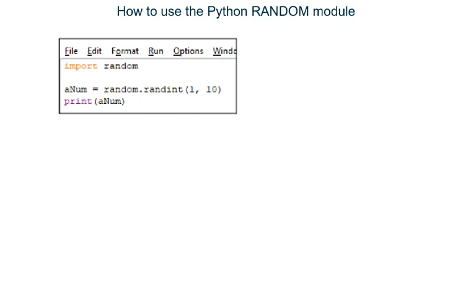Although that doesn't sound very useful, we actually do this surprisingly often. Our program needs to import the module at the very start, so this program begins with the instruction import random. Now, whenever we want to use some code from inside the random module, we simply write random, followed by a dot, followed by whatever code we want to use from inside the random module.